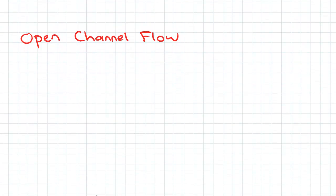So open channel flow, as the name suggests, is some sort of flow that is exposed to the atmosphere. That means the flow has a free surface, which means there can be no applied pressure to induce a flow.